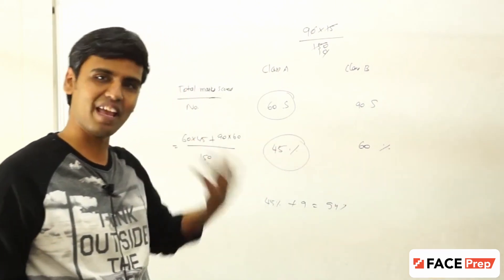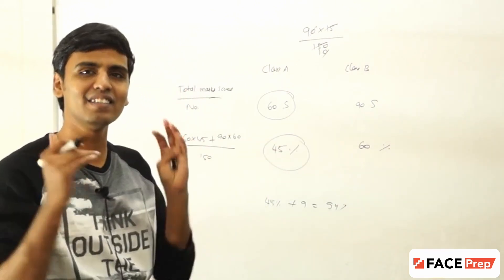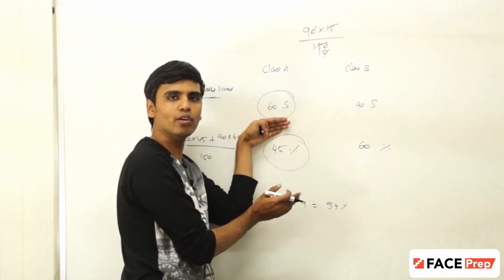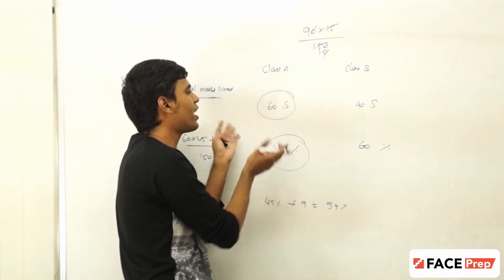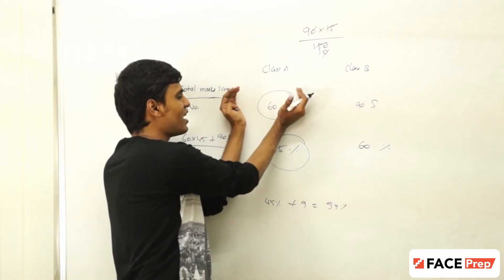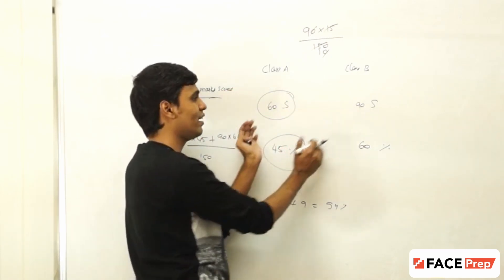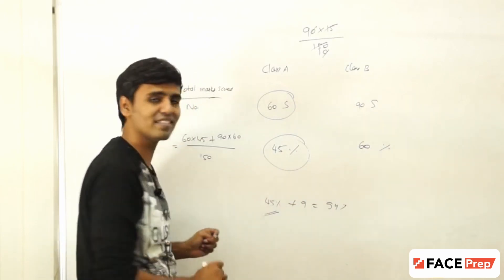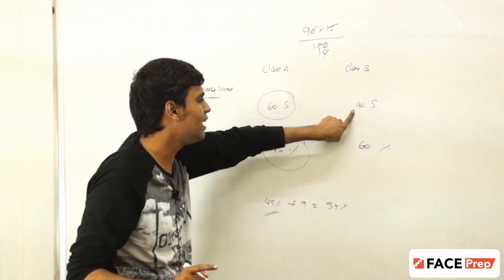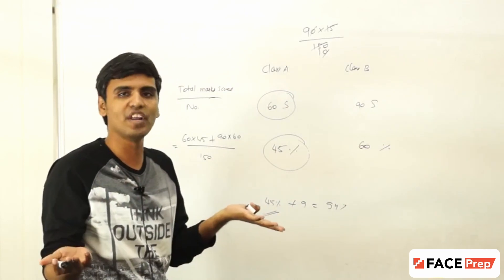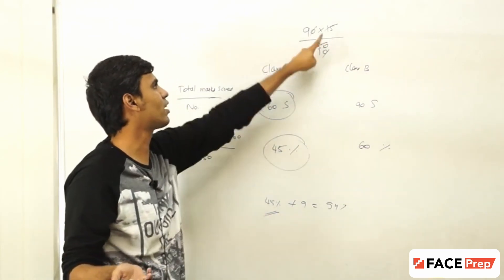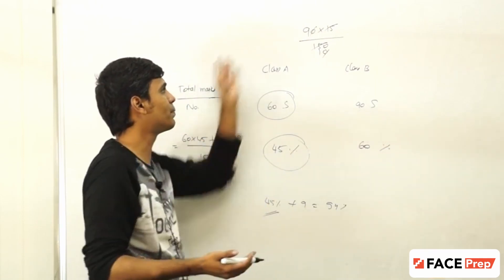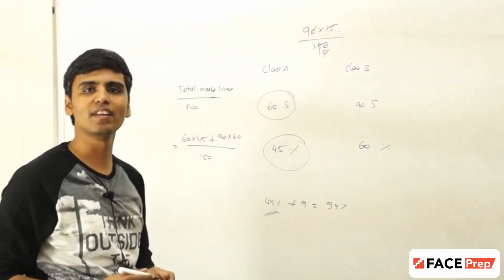So what did we do? We used the same deviations method. In this case there are many items for one value, so I am looking at 150 items in total — 60 items at 45 chocolates each, 90 items at 60 chocolates each. Had I assumed 45 chocolates as the average, these 90 people would have had an extra 15 chocolates. So 90 into 15 chocolates distributed equally amongst 150 people gives the answer 54.